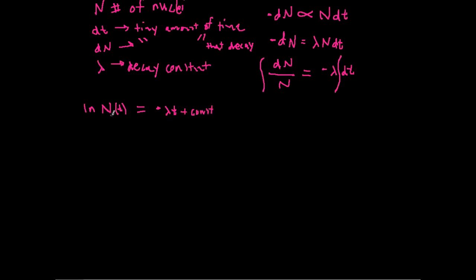Now if I want to solve this for n of t, I can do the e to both sides, so e, and this implies that n of t equals, now I can rewrite this as e to the negative lambda t, and times e to the constant, e to the negative lambda t, e to the constant, that's the exact same as this expression.